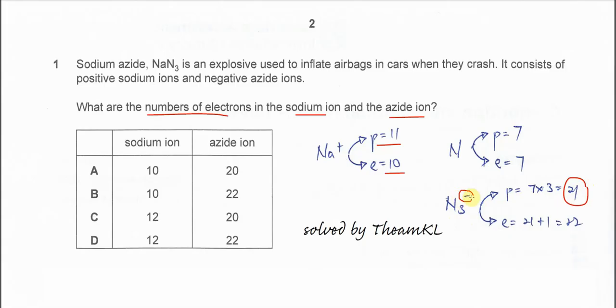Because it's a negative ion, the electron number will be one extra than the proton number, so therefore it's 21 plus 1. Therefore the electron number now is 22.